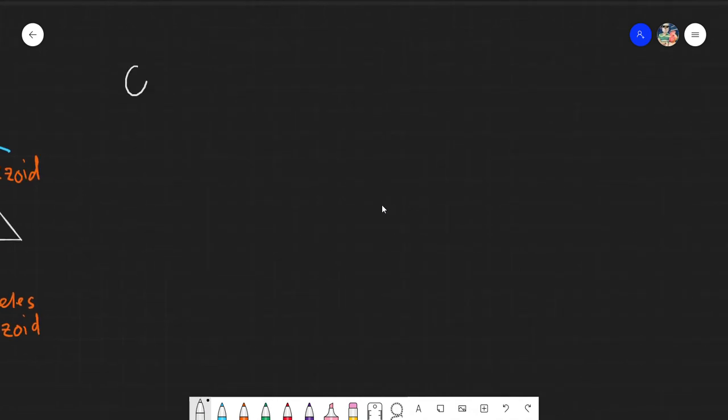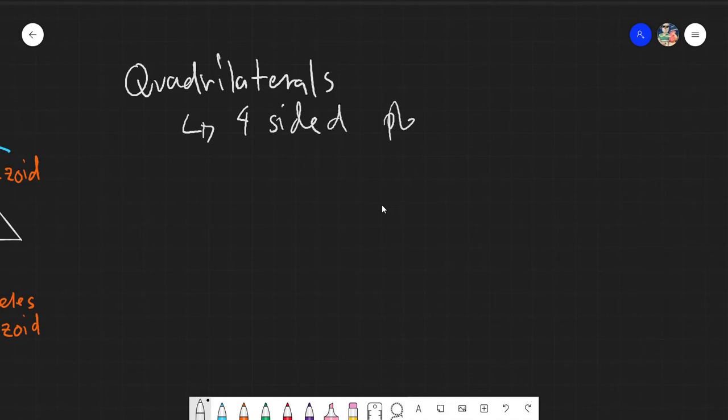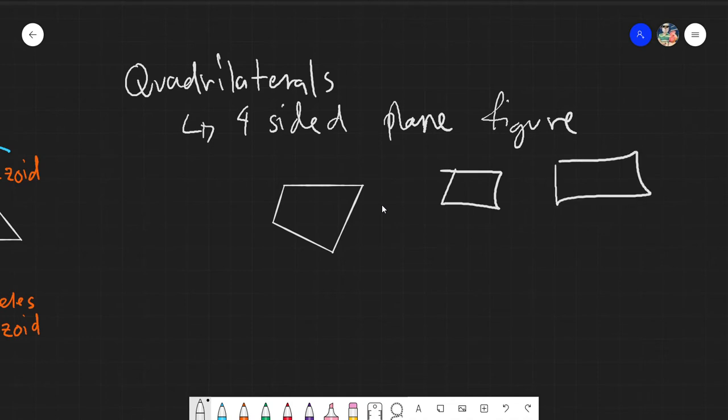So by definition, quadrilaterals, or any four-sided plain figure. And I do hope that you have watched our video about the different parts of a quadrilateral. Four-sided lang, kahit anong figure na four-sided. May it be a square, may it be a rectangle, or any figure that you will see that is a four-sided figure. It's a quadrilateral.